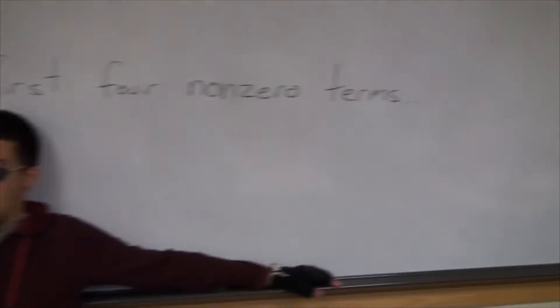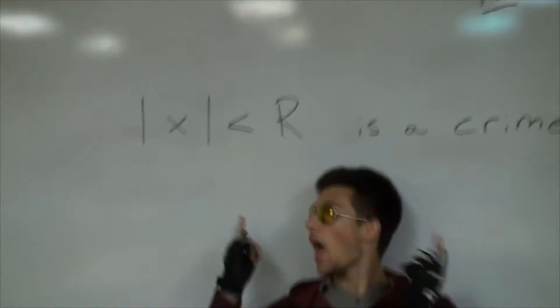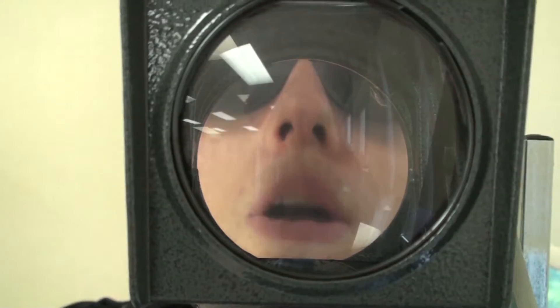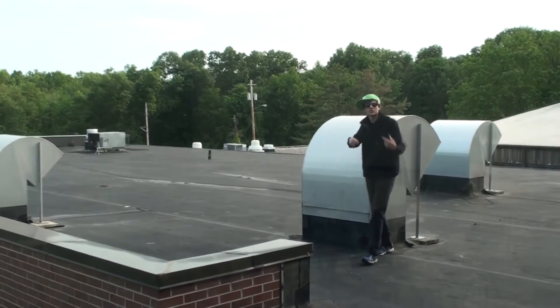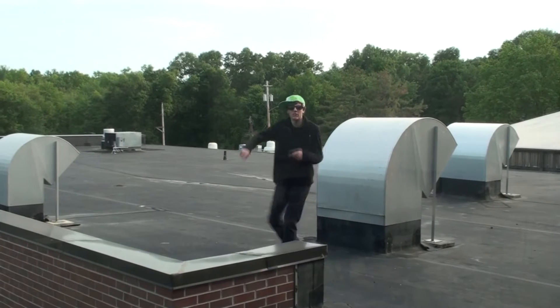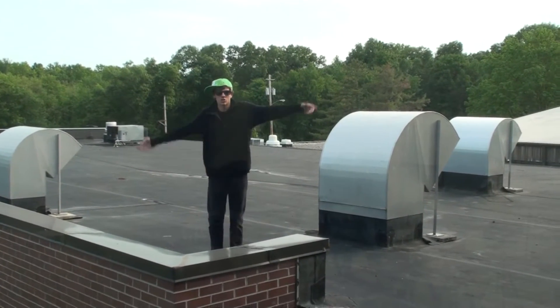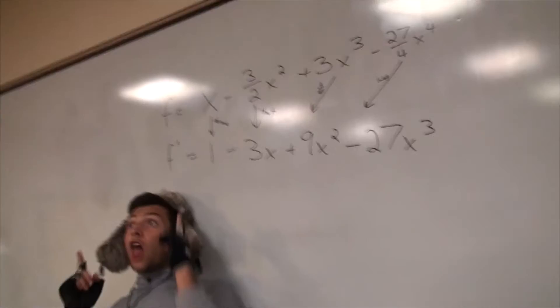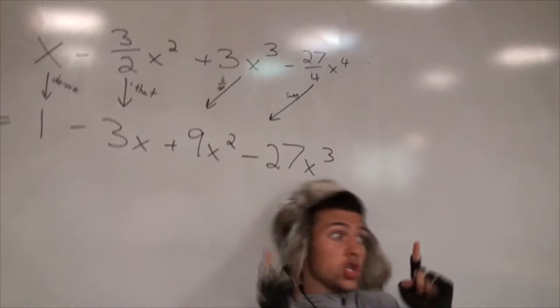Rate the first four terms at zero of the Maclaurin series for f prime, not expressing it as a rational function — for absolute value of x less than r is a crime. Part B of this question is quite easy: all you gotta do is just derive each of the terms of f of x which we were given at the start of this problem. So just bring those exponents right down to solve that, leaving us with 1 minus 3x plus 9x squared minus 27x to the third. The question also asks for f prime as a function, which is also quite straightforward.